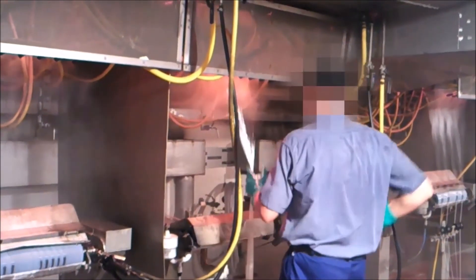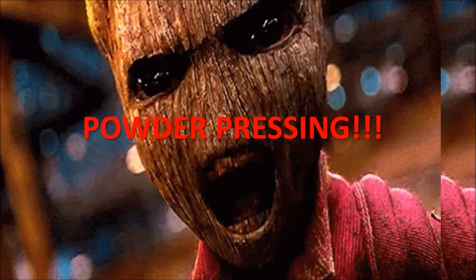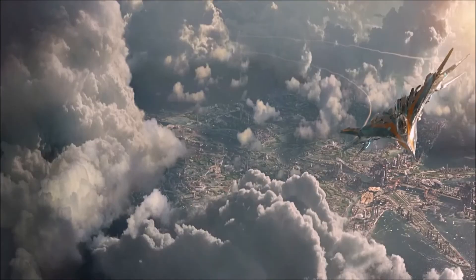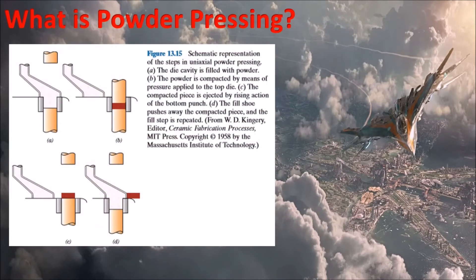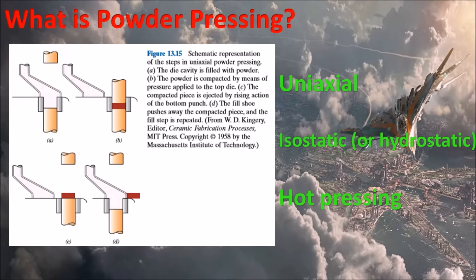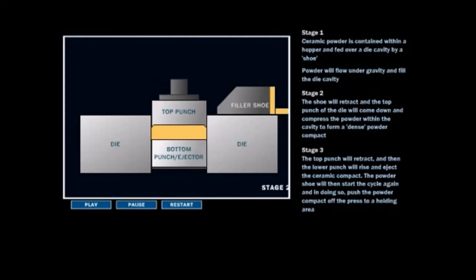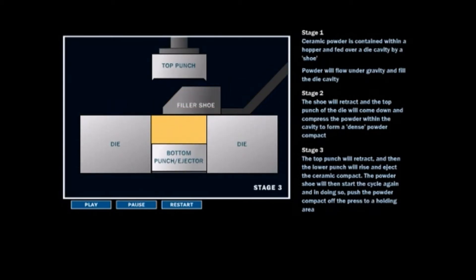Now that we're done with glass fabrication, let's go to particulate powder pressing. Powder pressing is simple: it uses pressure applied to powder particles — not pure ceramic, as there can also be particles of metals. In powder pressing, we have three types: uniaxial, isostatic or hydrostatic, and hot pressing. Here is an animation showing how powder pressing works.